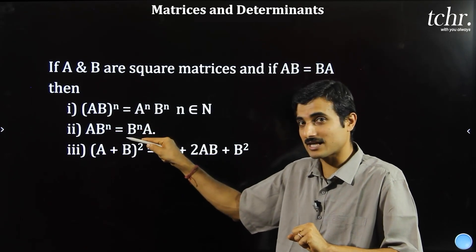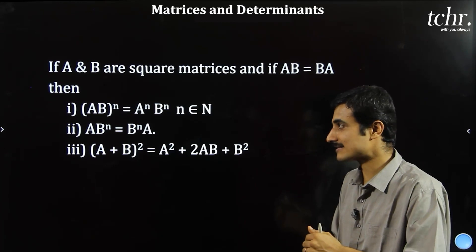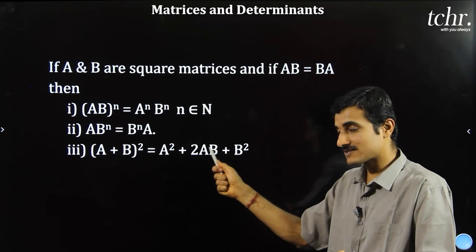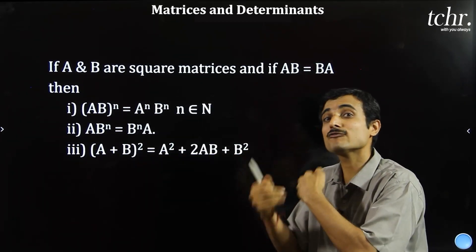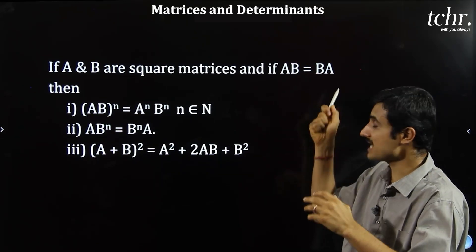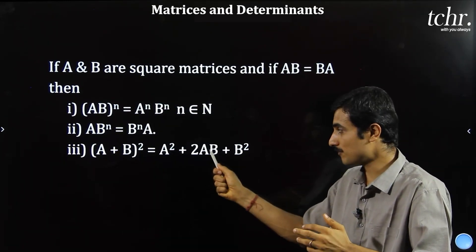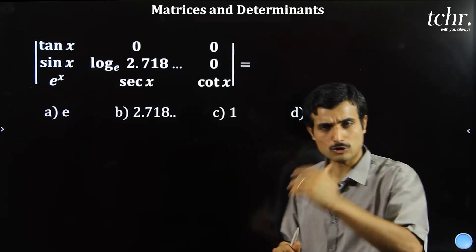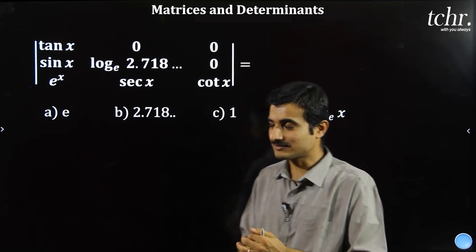A plus B whole square equals A squared plus 2AB plus B squared is valid only when AB equals BA. Otherwise, A plus B whole squared equals A squared plus AB plus BA plus B squared, since AB and BA are different in general. AB equals BA is the special case where the expansion simplifies to A squared plus 2AB plus B squared. Now the question: find the determinant of this particular matrix.